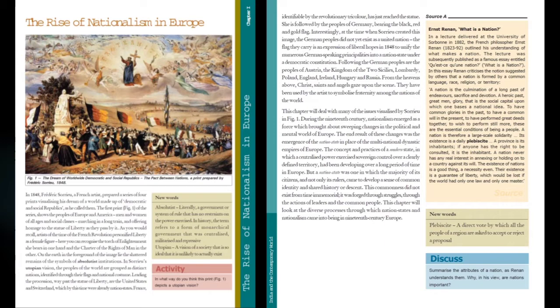The Statue of Liberty is considered a universal symbol of freedom. It is an allegory — allegory means a thing prepared to represent some ideas or thoughts. Artists of the time of the French Revolution personified liberty as a female figure. You can recognize the torch of enlightenment she bears in one hand and the charter of the rights of man in the other. Enlightenment means the beginning of a new era promoted by positive energy that leads to the well-being of people.